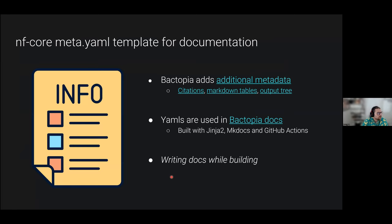Finally, I use the meta.yaml template for documentation. When I first saw that meta.yaml, I thought it would be nice to build documentation from. So I add things like citations, markdown tables, and output trees. The YAML files are then used to build documentation using Jinja2 templates, MkDocs Material, and GitHub Actions. This has really saved me a lot of time by allowing me to write documentation while building Bactopia.